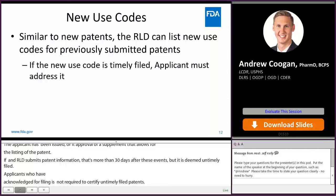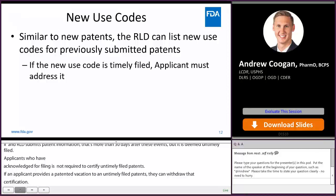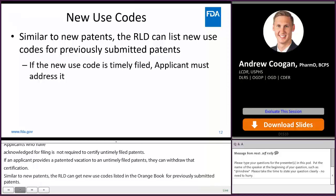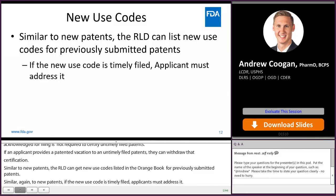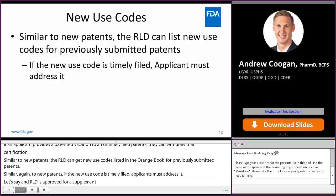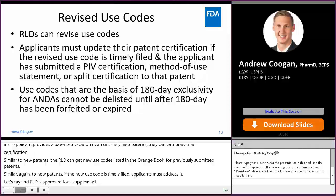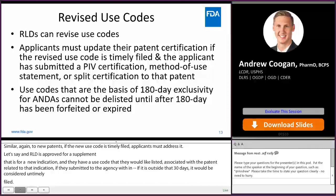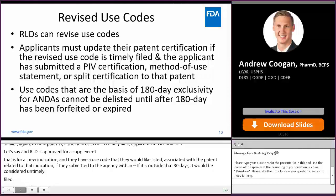Similar to new patents, the RLD can also get new use codes listed in the Orange Book for previously submitted patents. If the new use code is timely filed, applicants must address it. For example, if an RLD is approved for a supplement for a new indication and submits a use code associated with a related patent within 30 days of supplement approval, the new use code is timely filed; outside that 30 days, it is untimely. RLDs can also revise use codes, and applicants must update their patent certification if the revised use code is timely filed and they had previously addressed that patent with a paragraph 4 certification, method of use statement, or split certification.